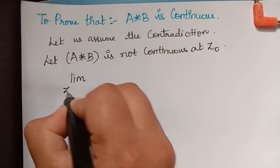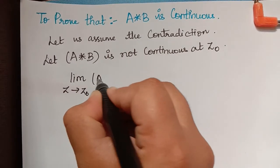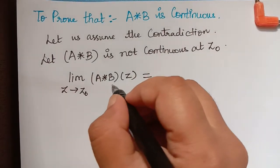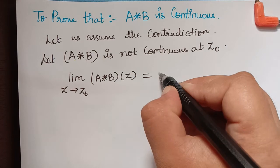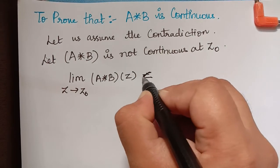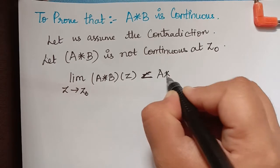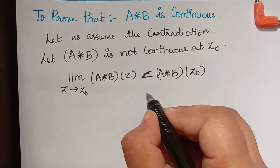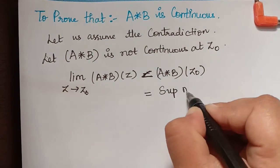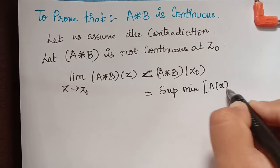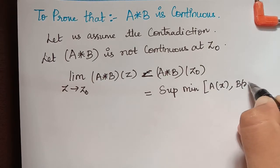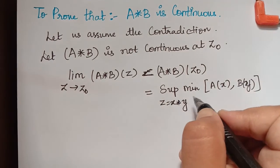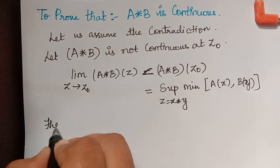Because a★b is not continuous at z₀, it means that the limit as z tends to z₀ of a★b(z) is not equal to a★b(z₀). Since it is not equal, we can take it as strictly less than a★b(z₀). By definition, a★b(z₀) is the supremum of the minimum of a(x) and b(y), where z = x★y.